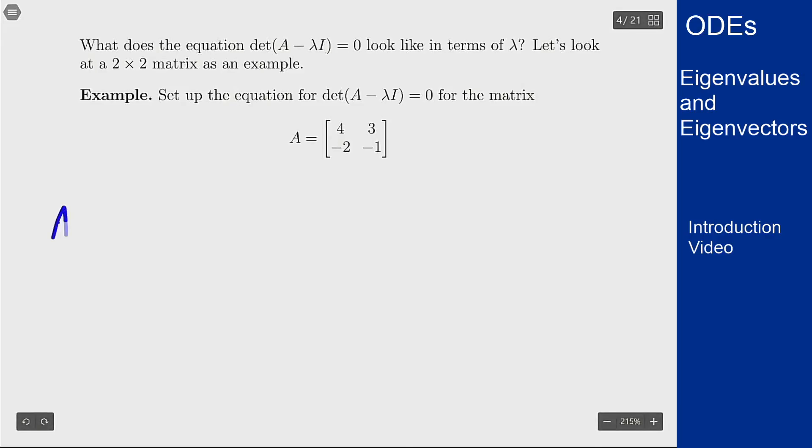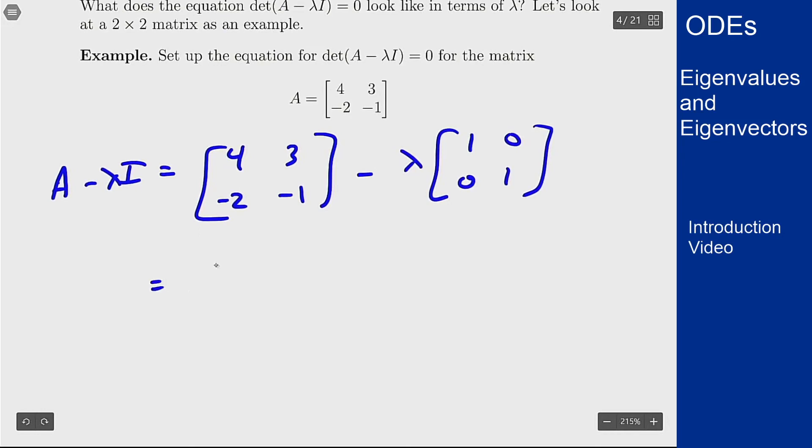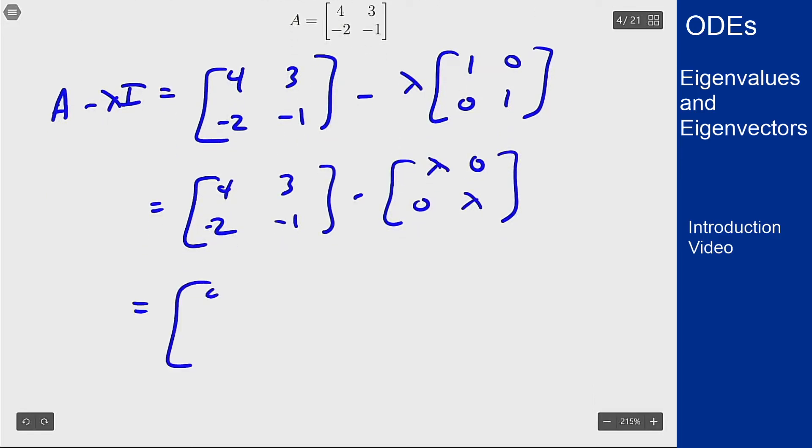Well I can look at just now what I want to look at is A minus lambda I. This will be the matrix [4, 3; -2, -1] minus lambda times the identity matrix [1, 0; 0, 1]. I can put the lambda inside to get [-lambda, 0; 0, -lambda] and I can combine the matrices. I get [4 minus lambda, 3; -2, -1 minus lambda] and now this is 2 by 2, I can take the determinant.